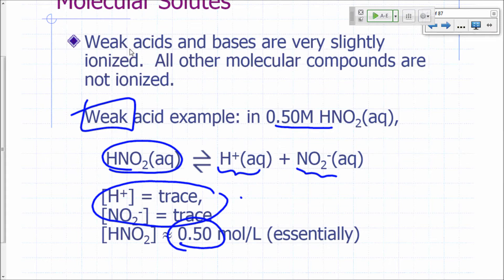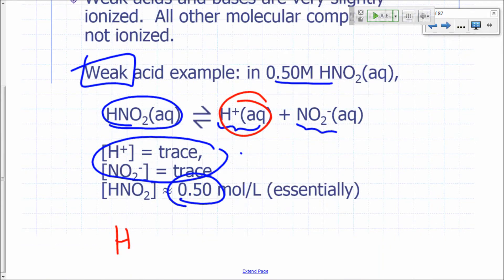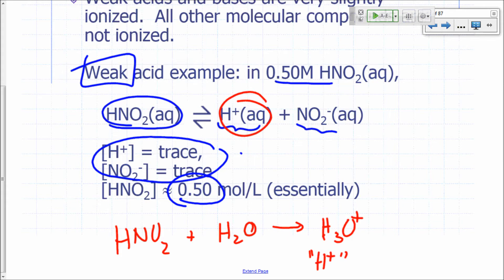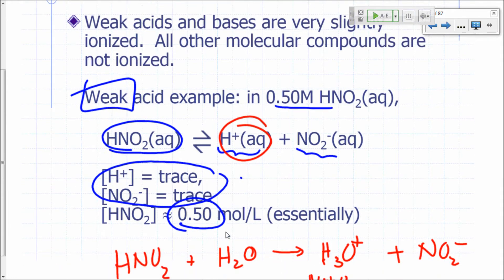Most other molecular compounds are generally not ionized. But acids and bases are partially ionized, and the reason is they actually react with water molecules. The H⁺ attaches itself to a water molecule. The better way to represent this reaction is to say HNO₂ interacts with a water molecule to give H₃O⁺—this is H⁺ aqueous—plus NO₂⁻. When we represent these ionization reactions, if it's partially ionized, we use a double-headed arrow to indicate we're dealing with a weak acid.